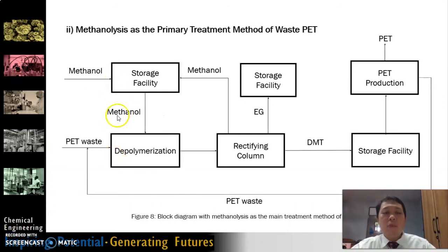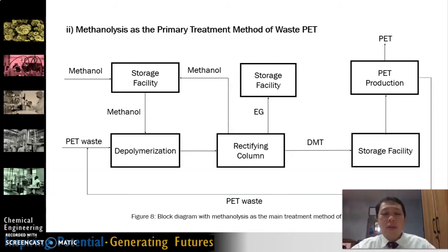Next is metanolysis as the primary treatment method of waste PET. Metanolysis is the breakdown of waste PET using methanol at high temperatures and pressures. As shown in Figure 8, waste PET is depolymerized in the presence of methanol to produce ethylene glycol (EG), dimethyl terephthalate (DMT), and unreacted methanol. These components are separated in a rectifying column where EG can be marketed and DMT can be further processed into fresh PET. The main products are EG and DMT.